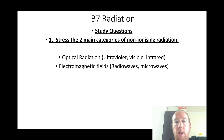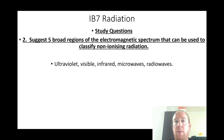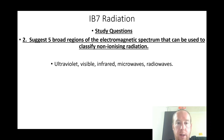Radiation. The two main categories of non-ionizing radiation: optical radiation (ultraviolet, visible, infrared) and electromagnetic fields (radio waves and microwaves). Suggest five broad regions of the electromagnetic spectrum used to classify non-ionizing radiation: ultraviolet, visible, infrared, microwaves, and radio waves.